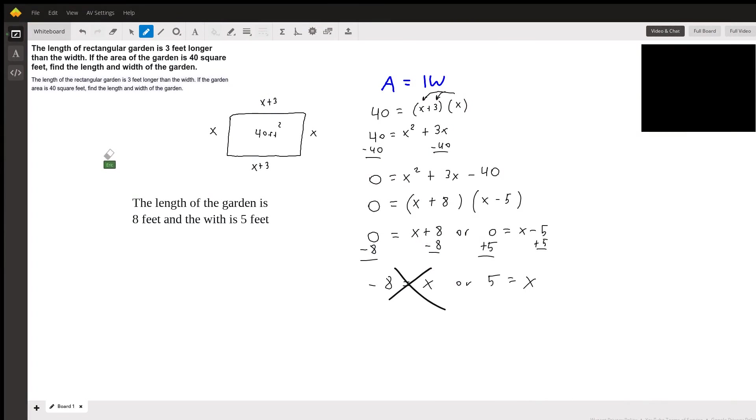All right, in this problem, we're given that the length of a rectangular garden is three feet longer than the width. If the area of the garden is 40 square feet, find the length and width of the rectangle.